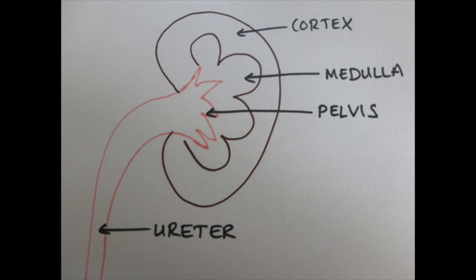Let's start by looking at the anatomy of the kidney. The outermost edge is called the cortex — this is where you'll find most of the nephrons. Beneath that is the medulla, the middle part, and that's where the loop of Henle hangs out. Then you have the pelvis, which is the white structure that comes out of the kidney, and that's where the collecting ducts run down into. Finally you have the ureter, which is simply a tube that transports urine made by the kidney to the bladder where it's stored.